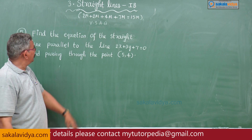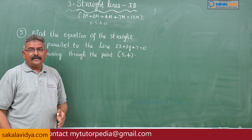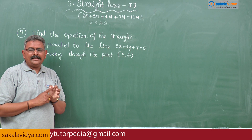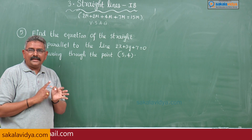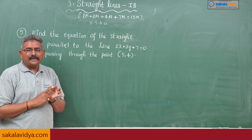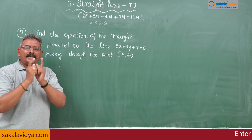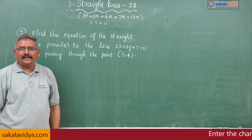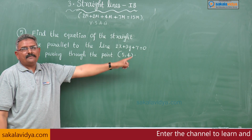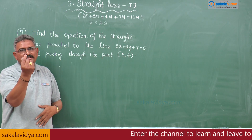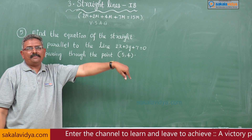The equation of a straight line parallel to the line ax plus by plus c is equal to 0 can be taken as ax plus by plus k is equal to 0. That means if two lines are parallel, they differ by the constants only. So the required equation is also 2x plus 3y plus k is equal to 0 — only one change in the constant. Since it passes through 5 comma 4, the k value can be obtained.